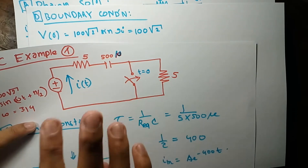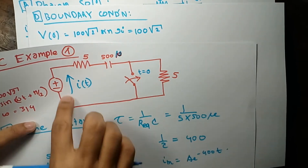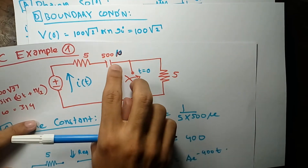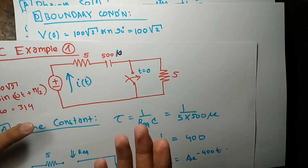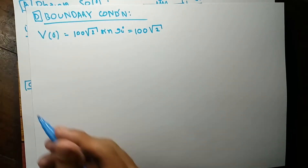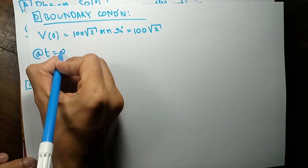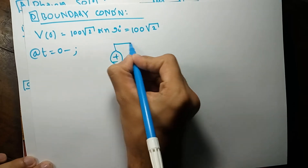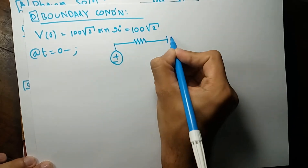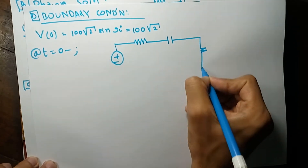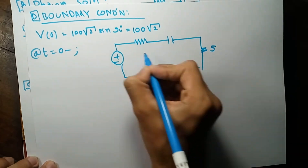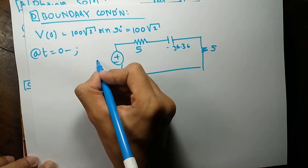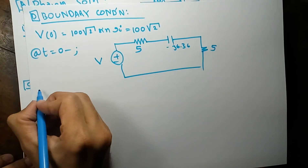The voltage across the capacitor cannot change abruptly, so we find V_C at t = 0⁻ and this will also be the voltage at t = 0⁺. At t = 0⁻, the circuit has two 5-ohm resistances and the capacitor impedance of −j6.36 ohms in series with the voltage source.